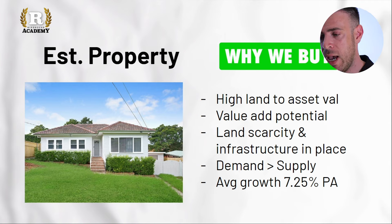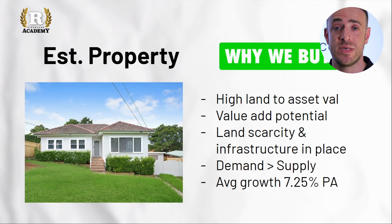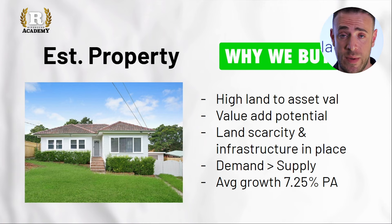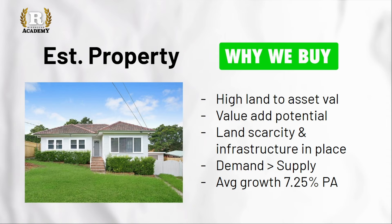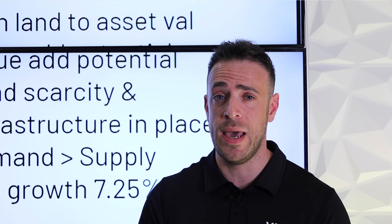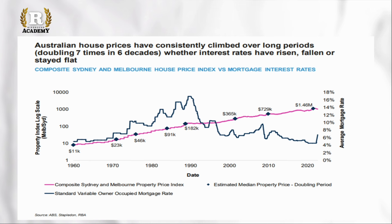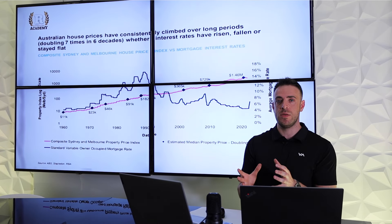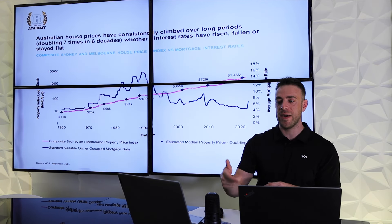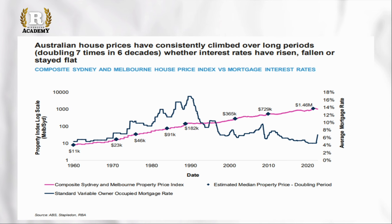Demand is stronger than supply in these areas, and the average capital growth rate is about 7.25 percent per annum — vastly outperforming every other property asset class we've discussed. Looking at established property over the last six decades, we've seen a doubling roughly every eight and a half years. Even getting average results, I'd be more than happy with an asset doubling in value every eight and a half years, particularly with strong leverage on that asset.